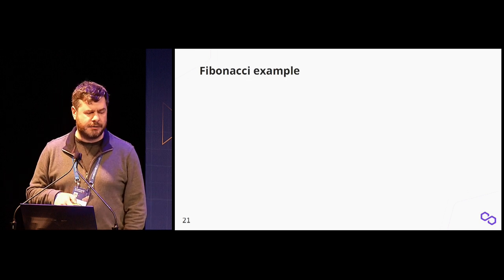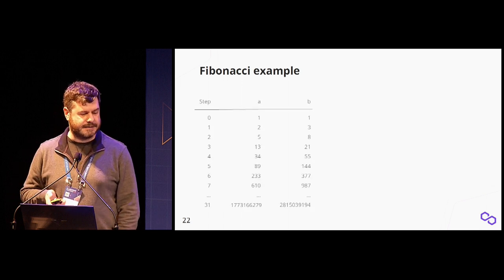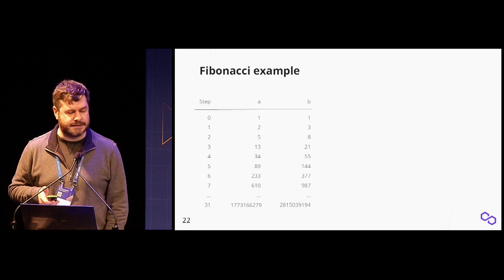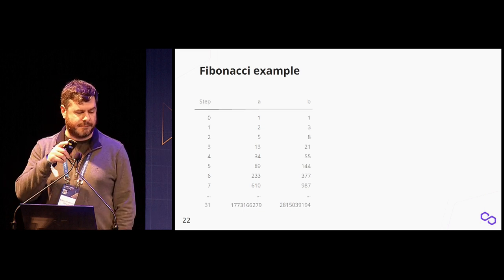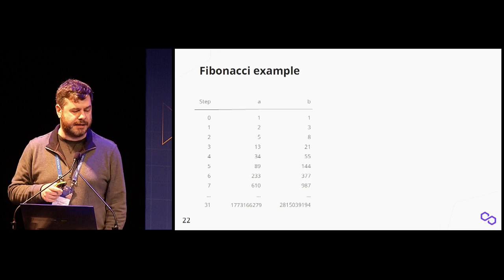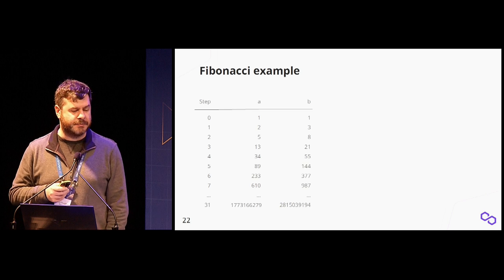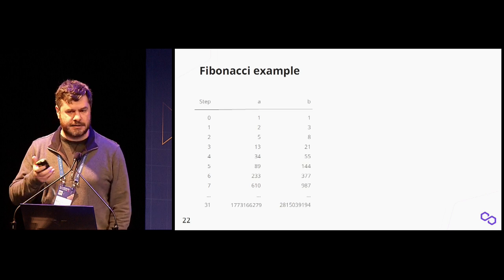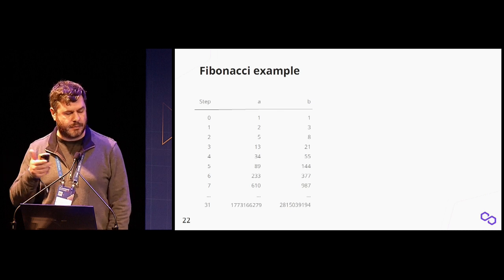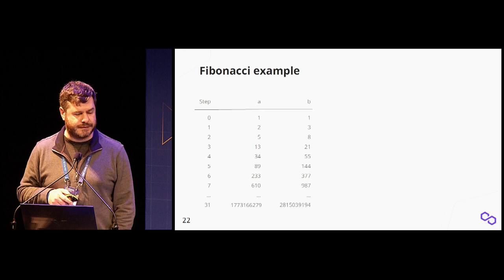To give a quick example, we usually use the Fibonacci sequence as a basic example. Let's say we describe the Fibonacci sequence using two columns in the trace. Every row represents two terms of the Fibonacci sequence—it zigzags from column A to B. So we start with one and one, then one plus one equals two, then one plus two equals three, then two plus three equals five. You can see how it progresses across the trace.